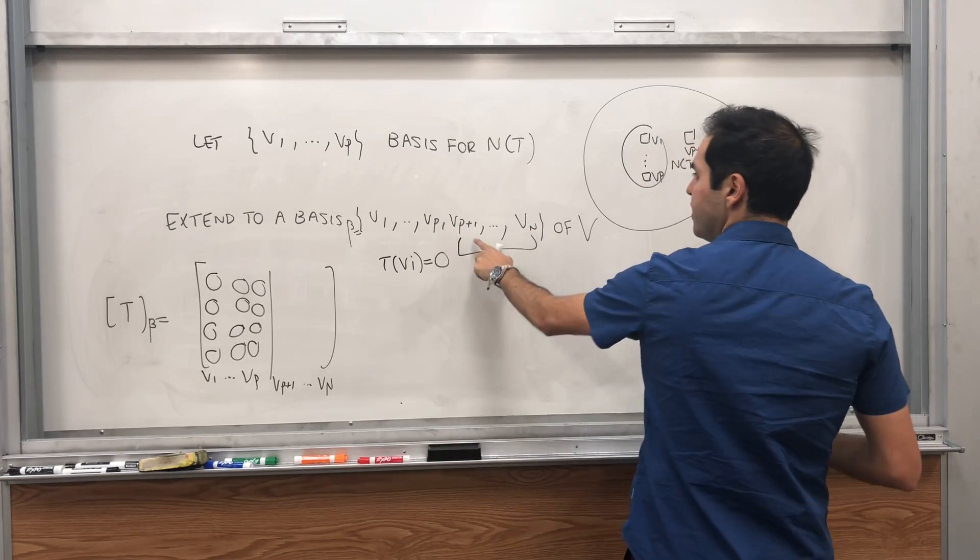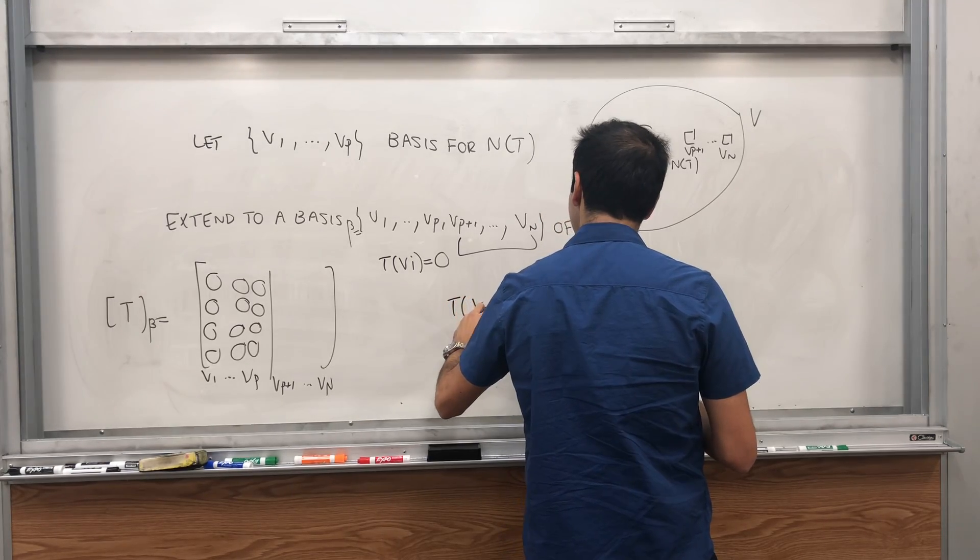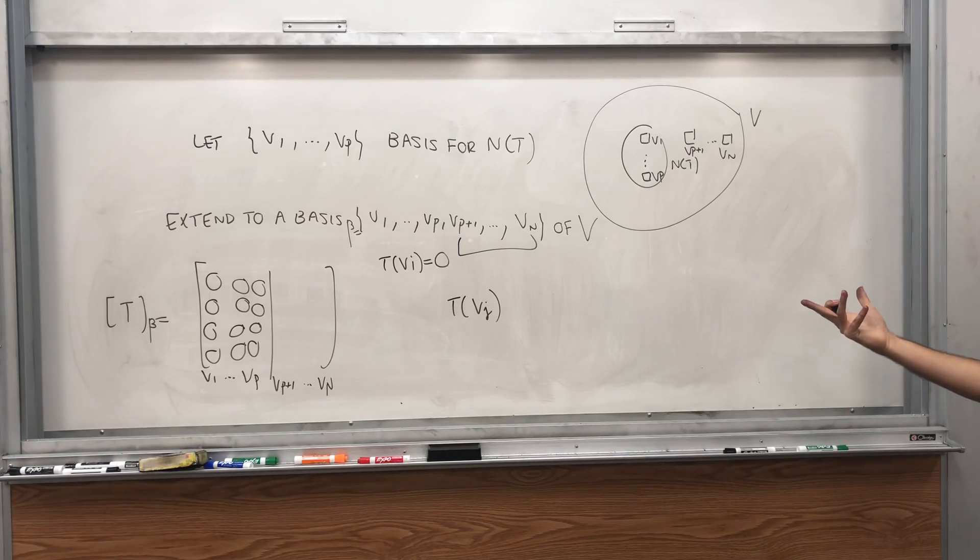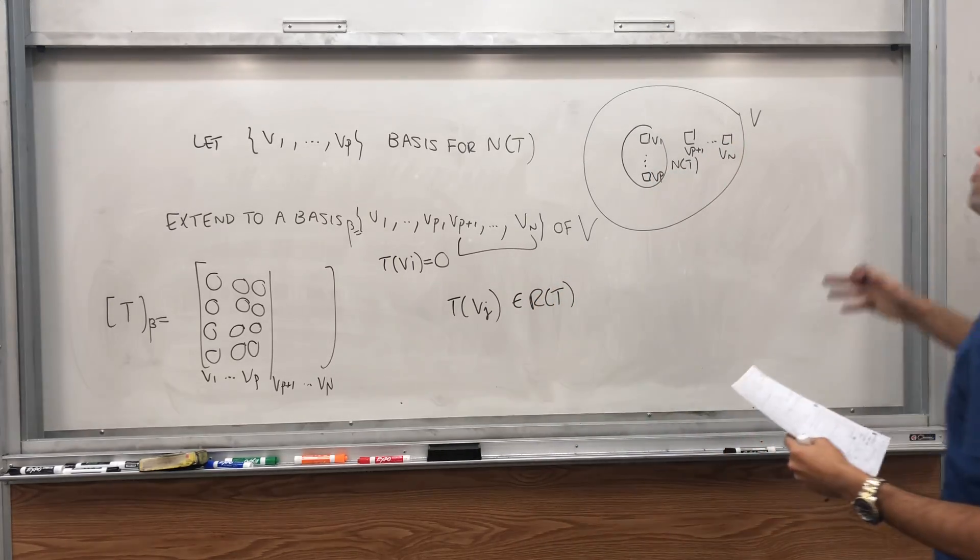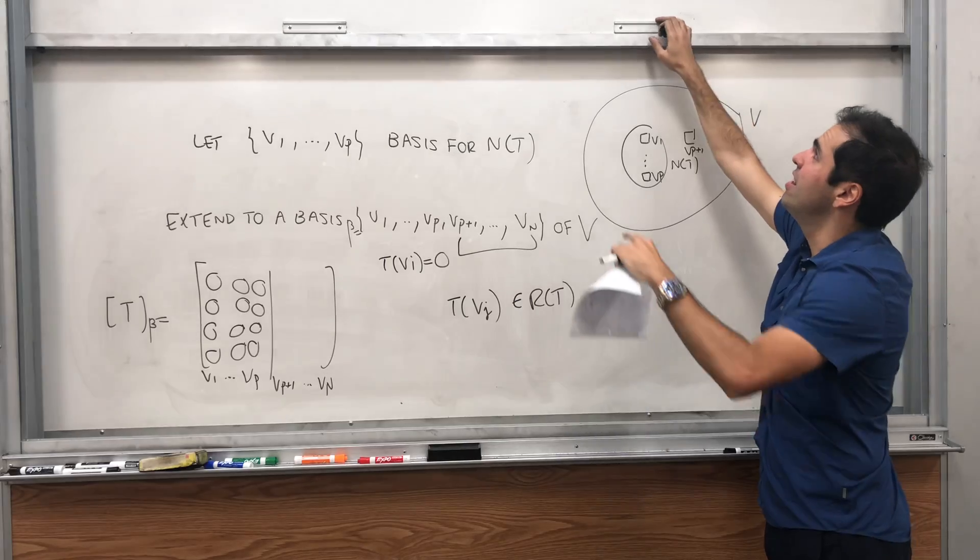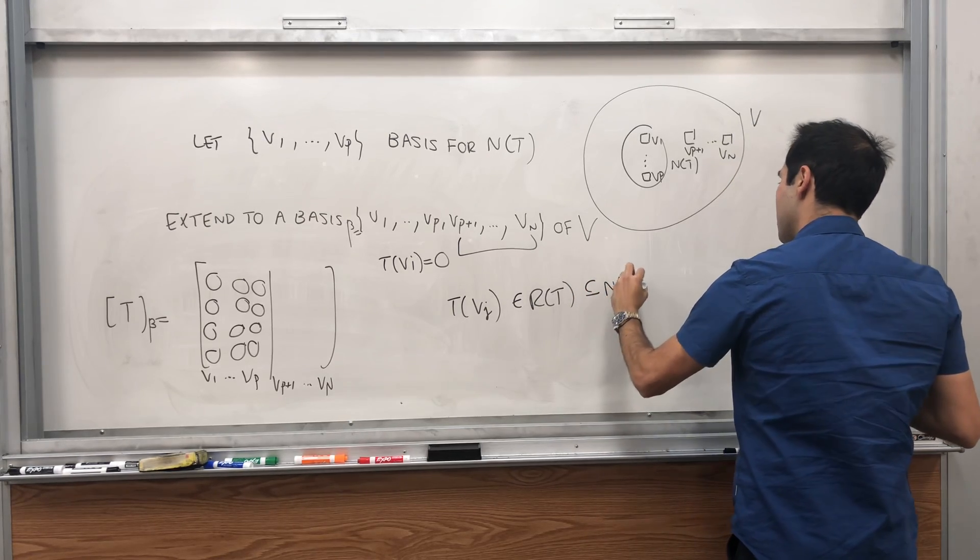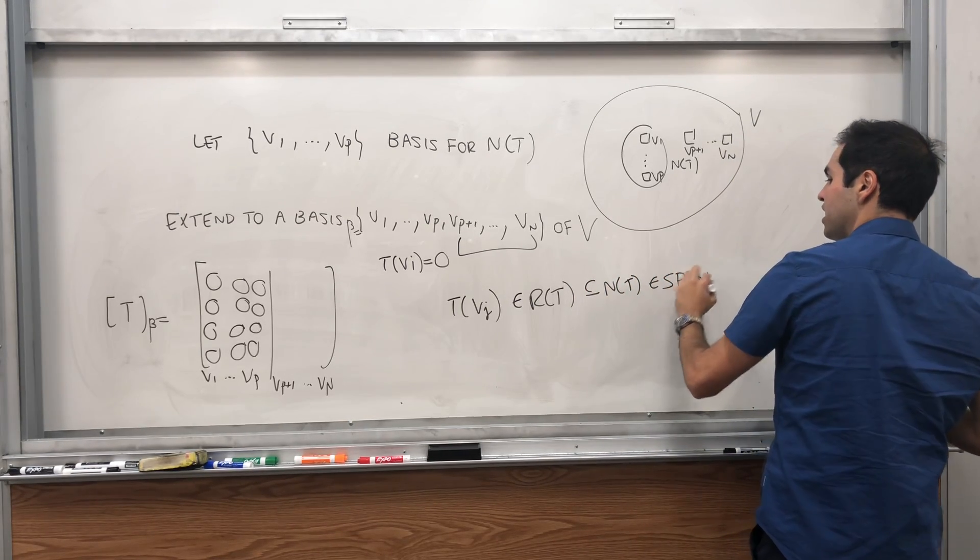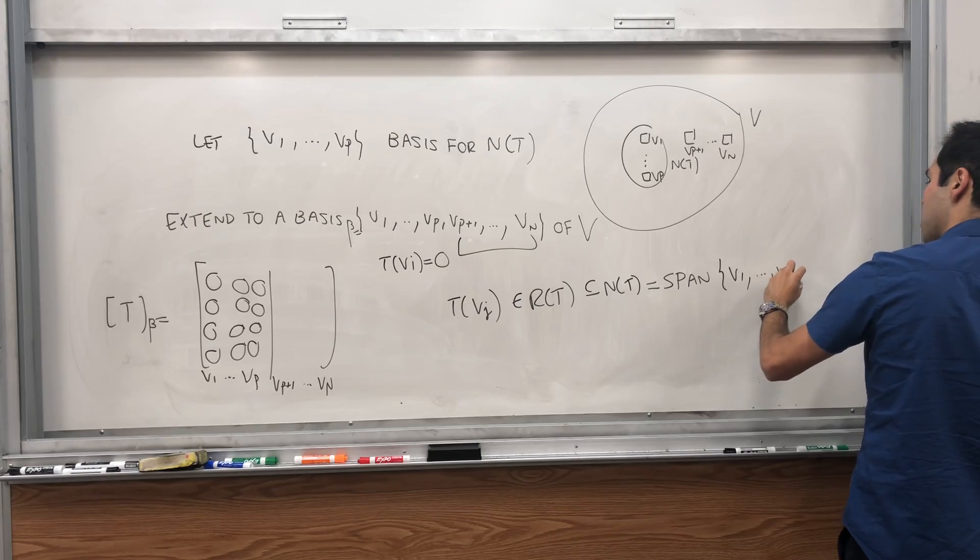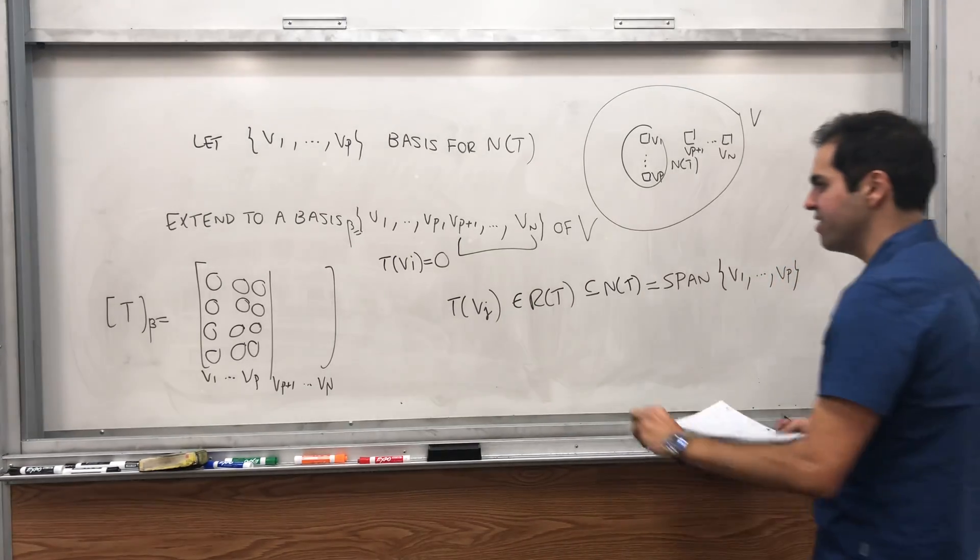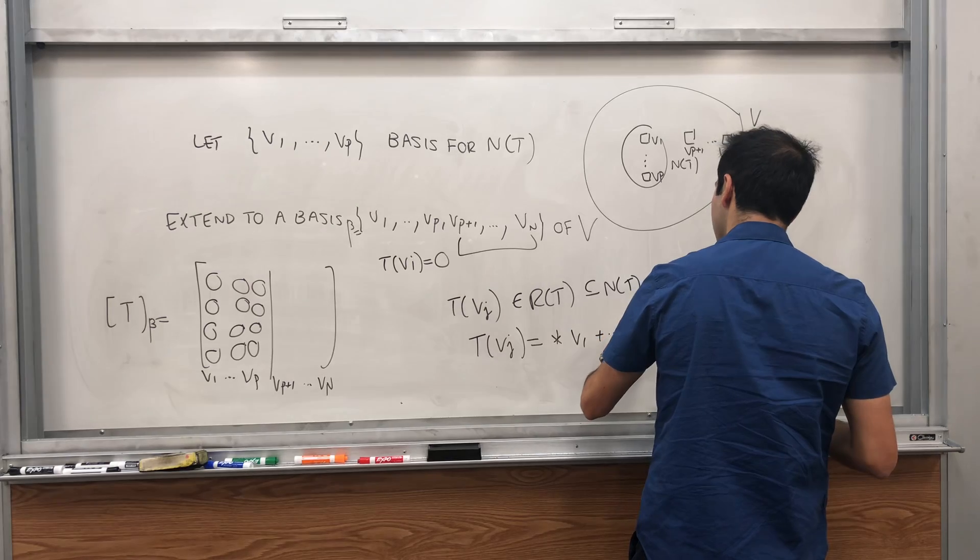and then let's see what happens to Vp plus one to Vn. Now, suppose you calculate T of Vj, where j is greater or equal to p plus one. Well, T of Vj, by definition, it's in the range, right? Because it's of the form T of something. But we've just seen, if T squared is zero, then the range is included in the null space, which is in the span of actually, right? The null space is equal to the span of the first p vectors. What does that tell us? It tells us T of Vj is just a linear combination of actually just our first p vectors.